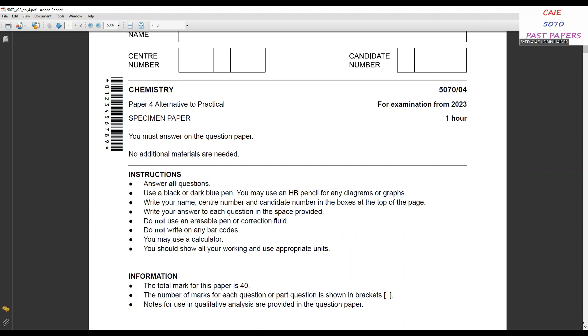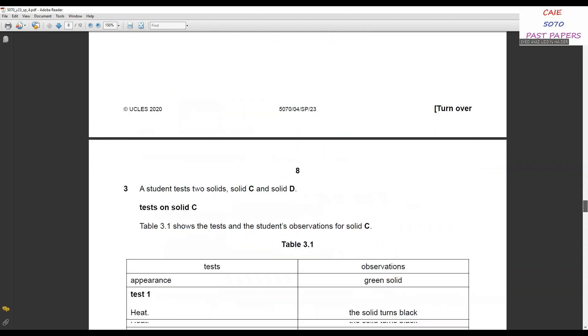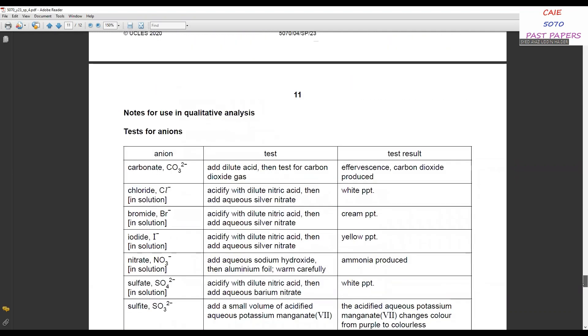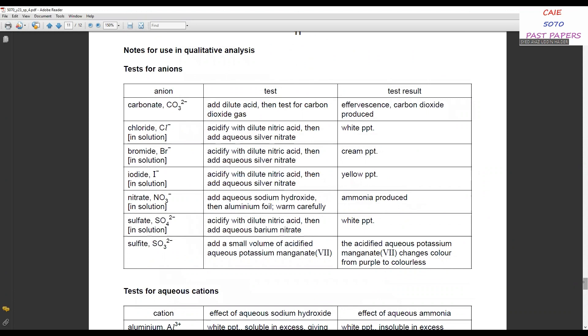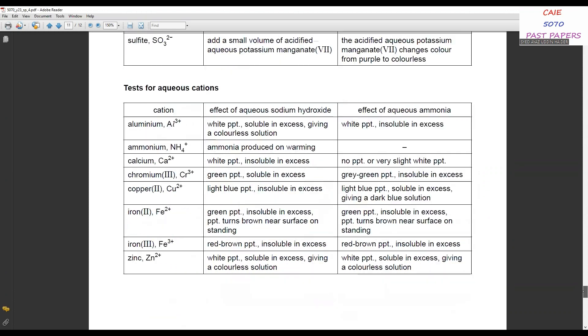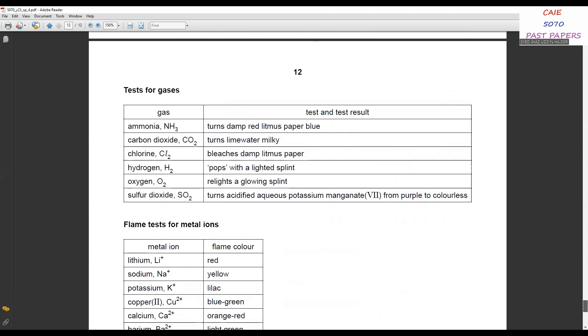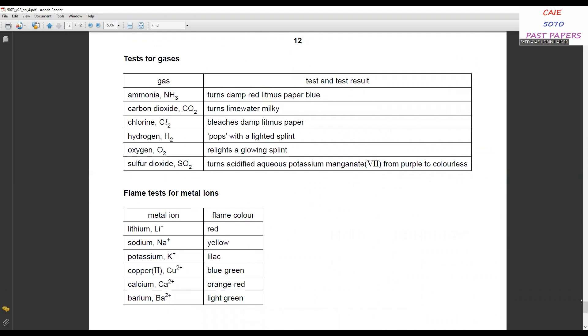Information: the total mark for this paper is 40. Previously it was 60, but now the total mark for this paper is 40. The number of marks for each question or part question is shown in brackets. Notes for qualitative analysis are provided in the question paper. This is something new - this is the qualitative analysis table. It will be provided to you. These are the tests for anions, tests for aqueous cations, and tests for gases, as well as flame tests for metal ions.